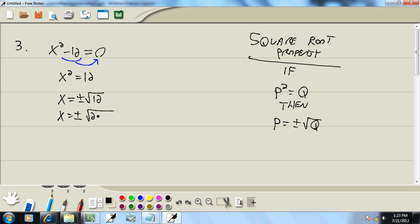Well, 12 is 2 times 2 times 3. And with the square root, we're looking for a pair of somethings. Here's a pair of 2s. So that's going to come out in front as a single 2. And we've got x is equal to plus or minus 2 square root of 3.